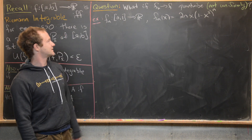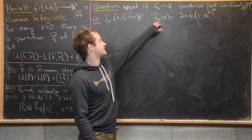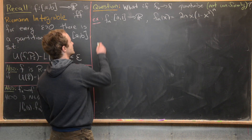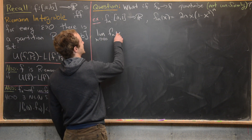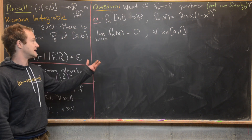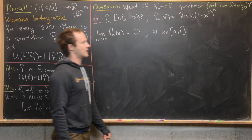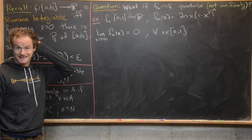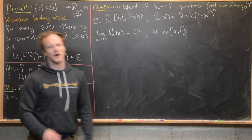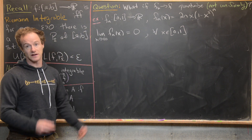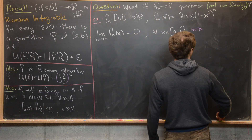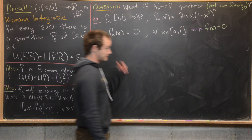The example we'll use is f_n : [0,1] → ℝ defined by f_n(x) = 2n · x · (1 − x²)^n. The limit as n → ∞ of f_n(x) equals 0 for all x on [0,1]. If x = 0 or x = 1 that zeros out the function immediately. If x is strictly between 0 and 1, the exponential of something in (0,1) raised to the n goes to zero — which we can see via L'Hôpital's rule. So the limiting function f(x) is just the zero function.